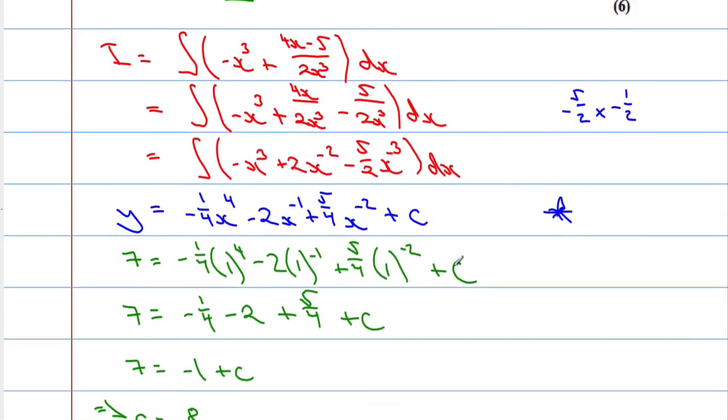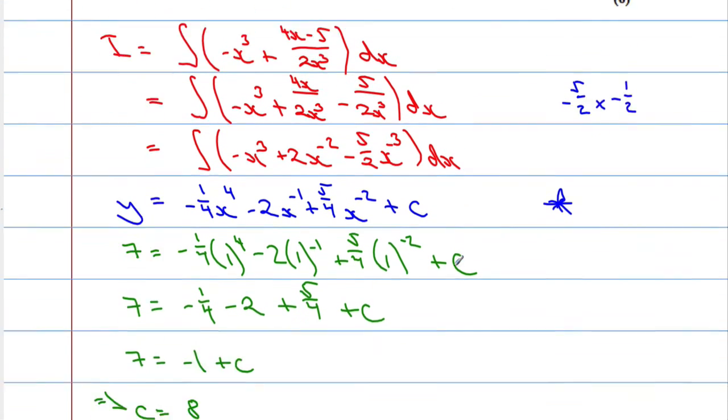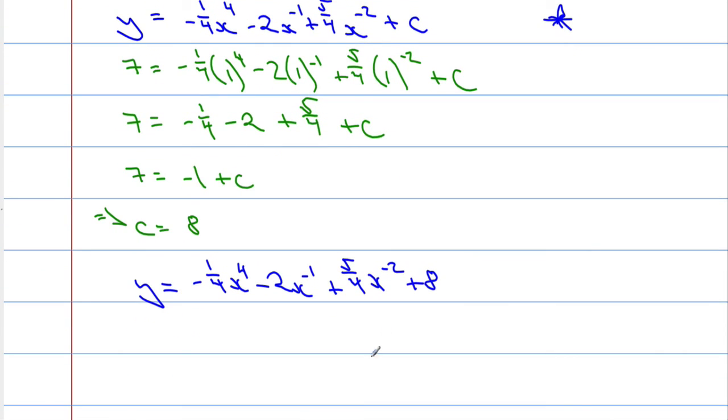It said give each term in its simplest form. So let's get rid of these negative powers. y is going to equal negative 1 quarter x to the power of 4 minus 2 over x plus 5 over 4 x squared plus 8.